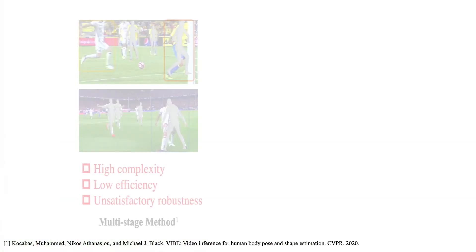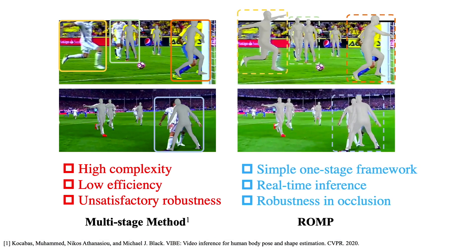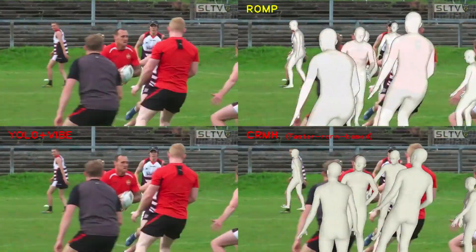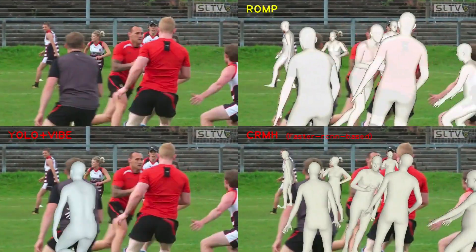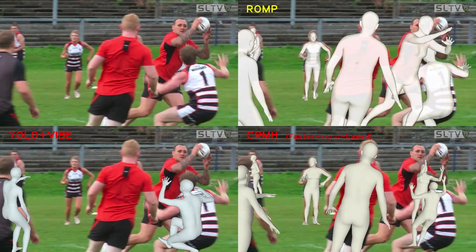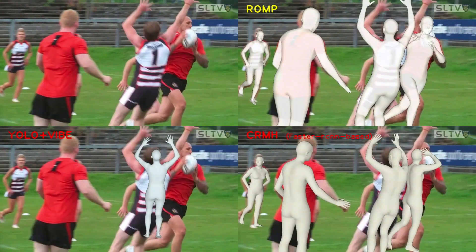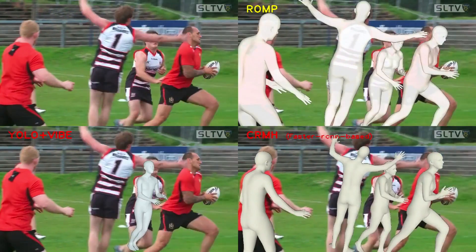Therefore, we develop ROMP, which stands for Regression of Multiple People. ROMP is a conceptually simple one-stage method. The concise one-stage architecture helps ROMP run in real-time. Additionally, ROMP is more robust to occlusion and truncation than previous methods, and works well even with heavy occlusion.